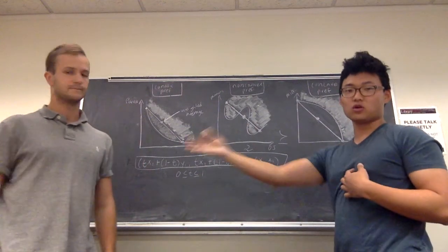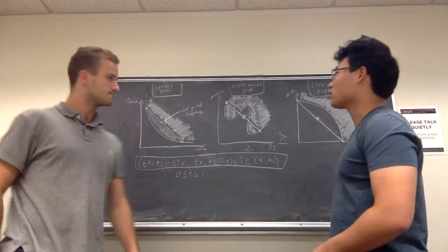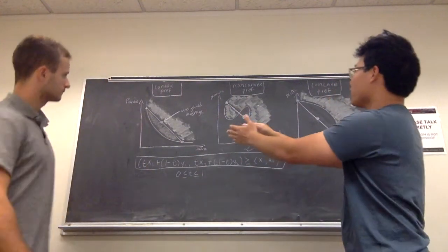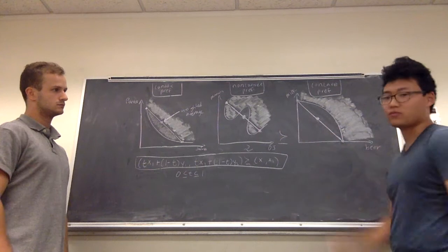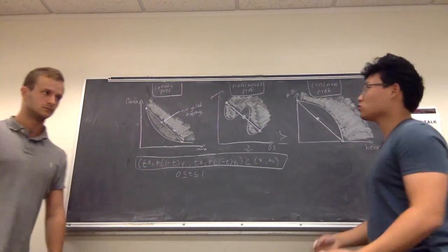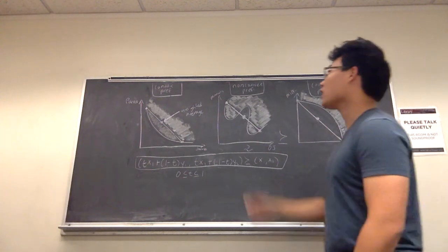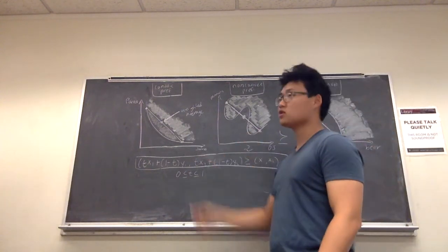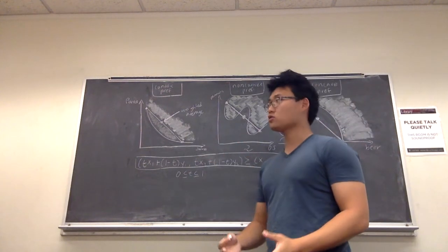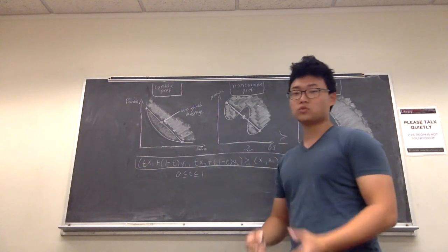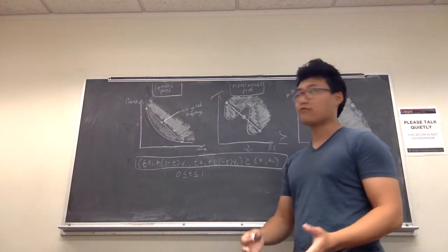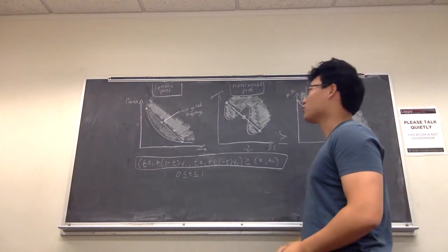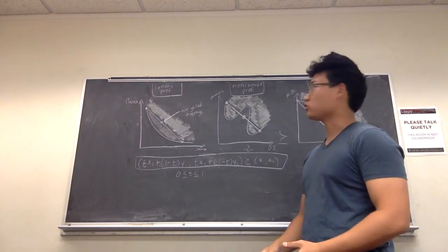Hi, my name is Eugene and this is Willem and today we'll be talking about convex, non-convex, and concave preferences. To start off, convex preferences are two goods where the consumer would prefer to have a combination or an average rather than an extreme of the two goods.